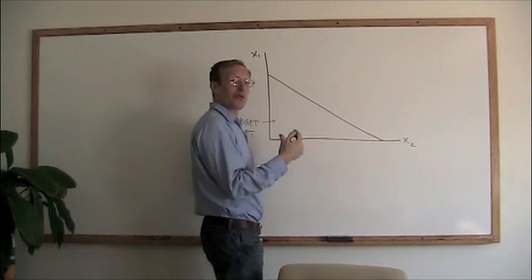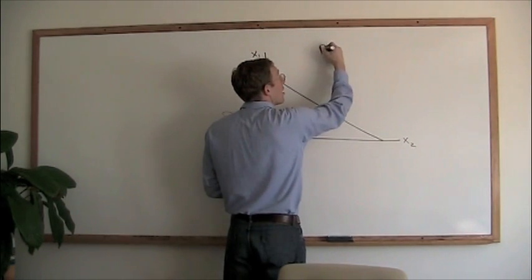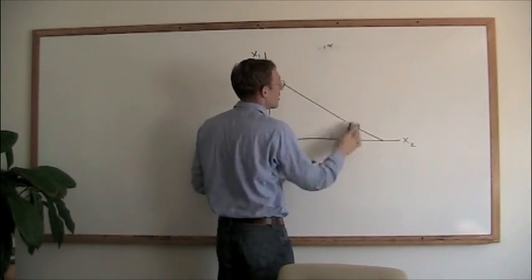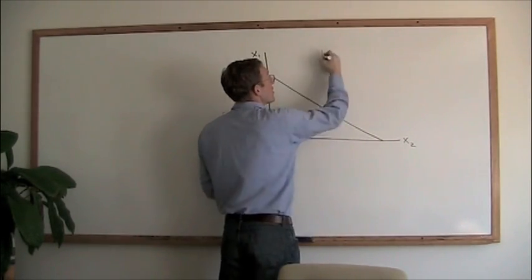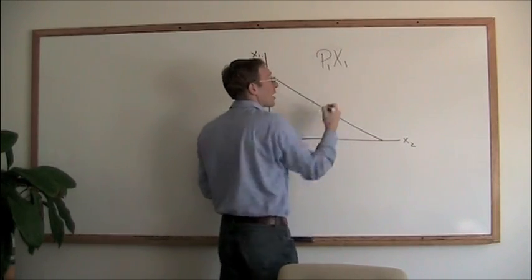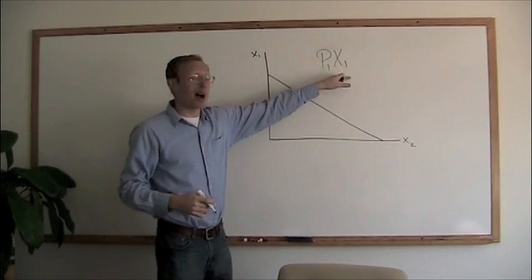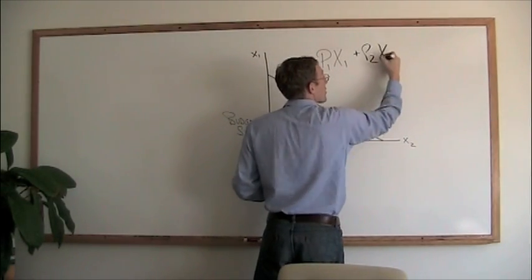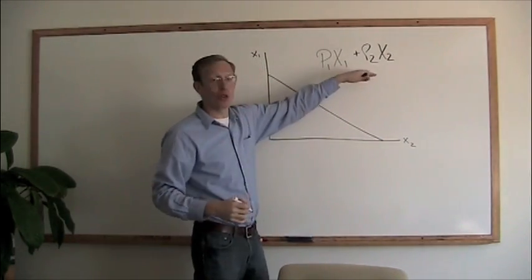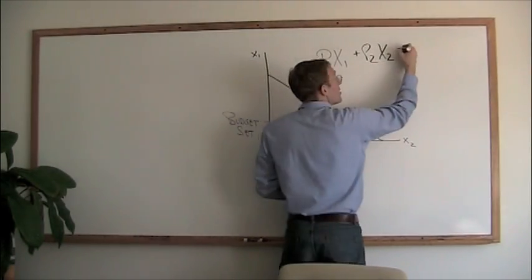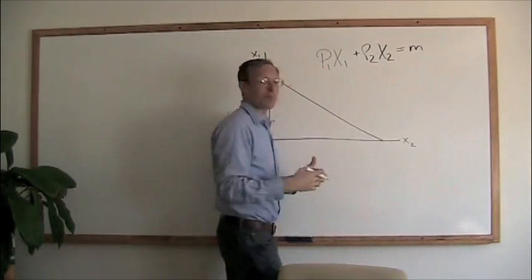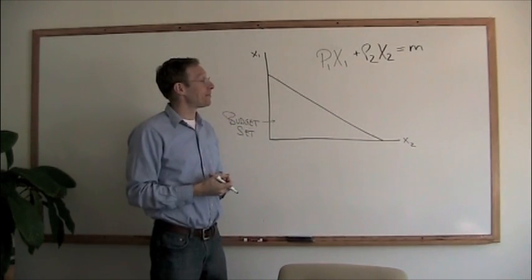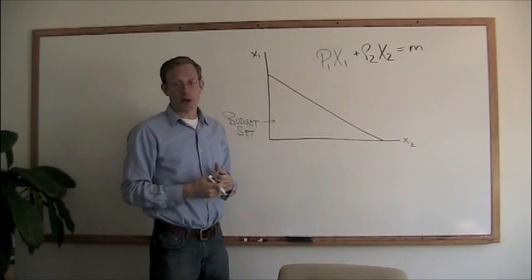This line typically takes the form of this: p1 times x1. Let's make that a little bigger so we can make sure everybody sees it. p1 times x1. That's the price of good one times the amount of x1 that you buy. And we're going to add that to p2 x2, which is the price of good two times the amount of x2 that you buy. And that's going to be set equal to m, which just simply stands for our budget, or the amount of money that we have to spend. That's our typical equation.